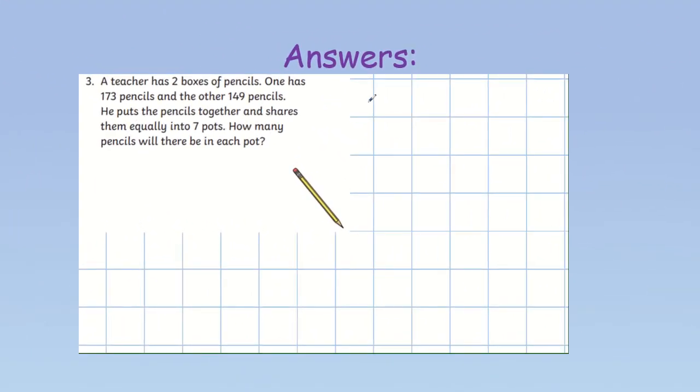So, question 3. We have 2 boxes of pencils. One contains 173 pencils and the other 149 pencils. So, our first step is to see how many pencils we have all together by adding. 3 add 9 gives us 12. 7 add 4 gives us 11. Add the one we carried gives us 12. 1 add 2 gives us 3. So, we have 322 pencils all together.